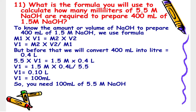Here we need to calculate the value of V1. So V1 = (M2 × V2) / M1. Before that, we need to convert 400 ml into liters, which equals 0.4 liters. Putting in the values: V1 = (1.5 M × 0.4 L) / 5.5 M. Finally, we get V1 = 100 ml. So you need 100 ml of 5.5 M NaOH.